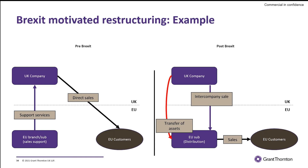Here we've got a high-level overview of a potential business restructuring or a change in a supply chain that can potentially be motivated by Brexit but doesn't necessarily have to be. On the left we see a UK company selling directly to EU customers, and maybe has some boots on the ground in the form of a rep office, representative, maybe a branch, maybe a sub providing some kind of sales support services — but the bottom line is sales are directly made by the UK company.